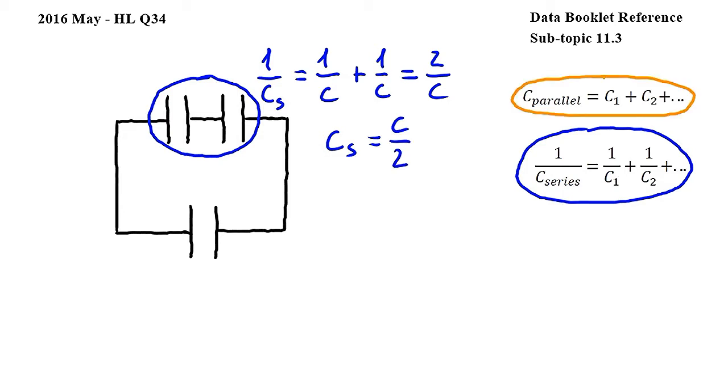Next we will use this equation also from subtopic 11.3 to find the total capacitance of the capacitors. We can use this equation because the two capacitors in the top are in parallel with the one capacitor in the bottom.